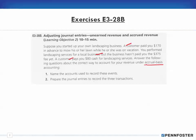They specify accrual basis because on a cash basis system you only make a journal entry when you pay out or receive cash. As you can see, the first two entries don't affect cash at all — only the third one does. It says: one, name the accounts used to record these events, and two, prepare the journal entries to record the three transactions. It's easier to just make the journal entries so you can see what accounts are used, so I'll skip straight to making them.